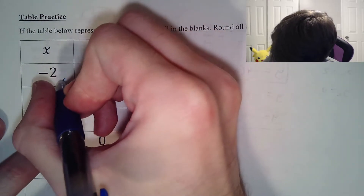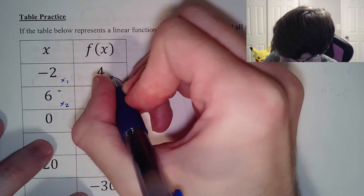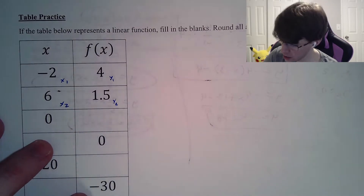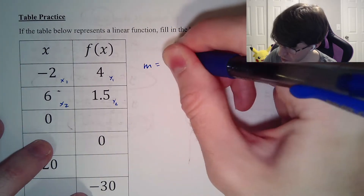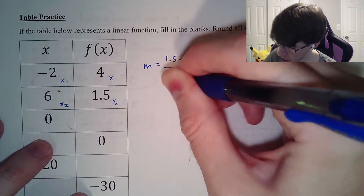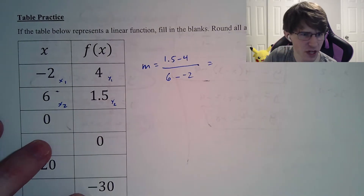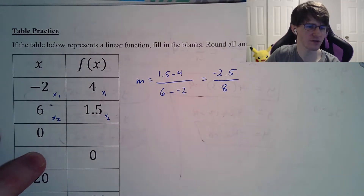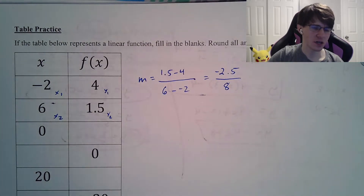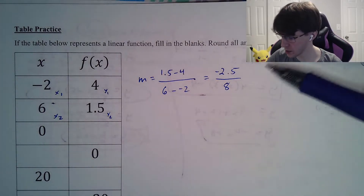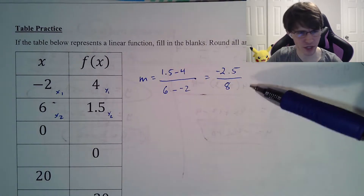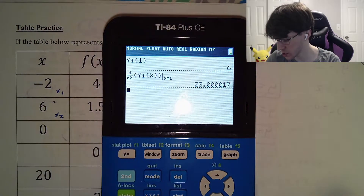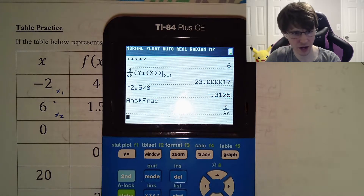To create the equation, we're going to do exactly what we were doing before. Label them: x1, x2, y1, y2. Therefore our m equals y2 minus y1 over x2 minus x1. That's going to give us a kind of weird number — negative 2.5 over 8.